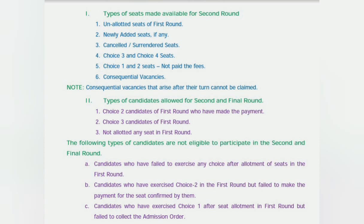Who can apply for the second round? Candidates who chose Choice 2 — meaning you are holding the seat — you must select Choice 2 and pay the fees. Don't think you don't need to pay just because you are not reporting to college. Choice 3 candidates don't need to pay but will participate in round two. Also, candidates who were not allotted any seat in round one will automatically go into round two based on their options.